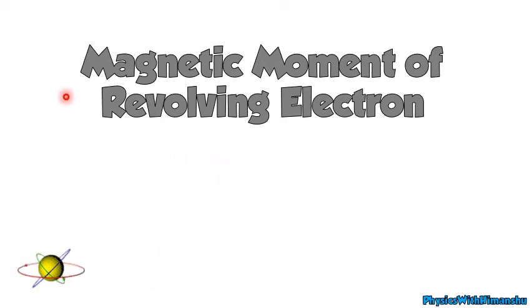Today's topic is magnetic moment of revolving electron. We'll discuss gyromagnetic relation and Bohr magneton. This is a very important derivation from this chapter.